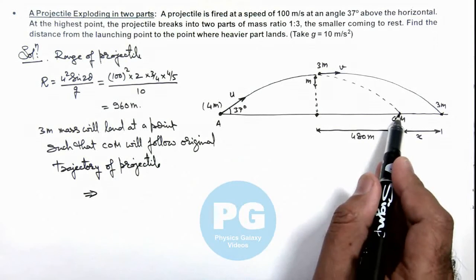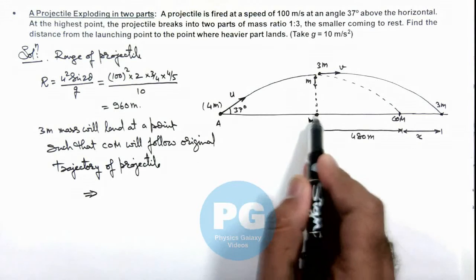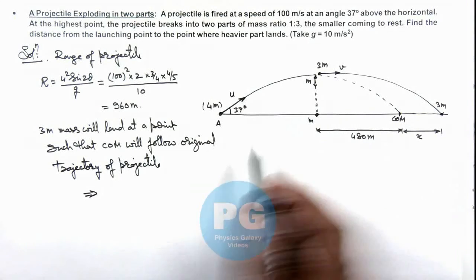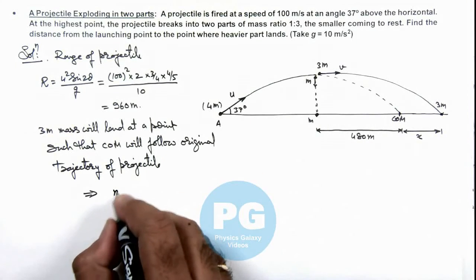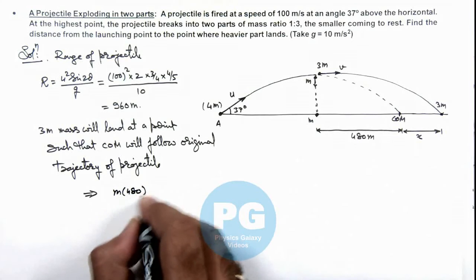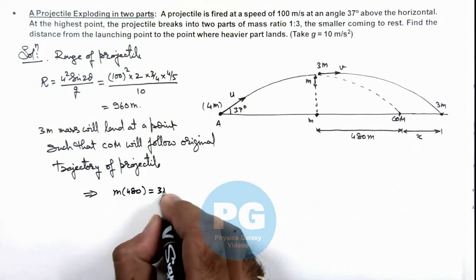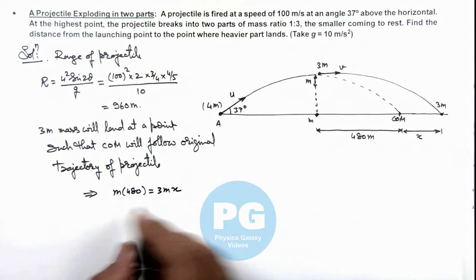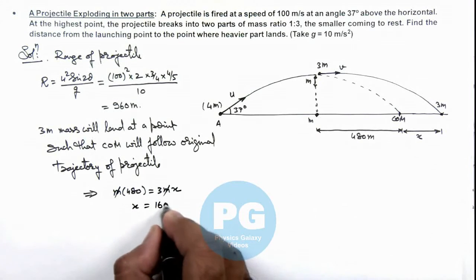This implies here we can write with respect to center of mass the mass moment of m and 3m must be same in the 2 directions. So here we can write m multiplied by 480 should be equal to 3m multiplied by x. Here m gets cancelled out and the value of x we are getting is 160 meters.